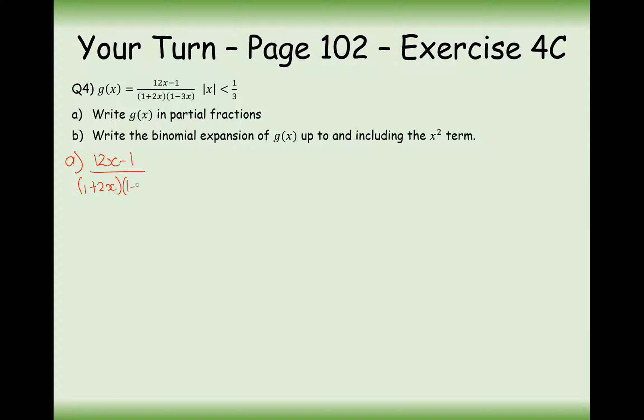So the first thing we need to do is split these up using partial fractions. So a over 1 plus 2x plus b over 1 minus 3x. And in this case here, we can therefore get to 12x minus 1 equals a 1 minus 3x plus b 1 plus 2x.